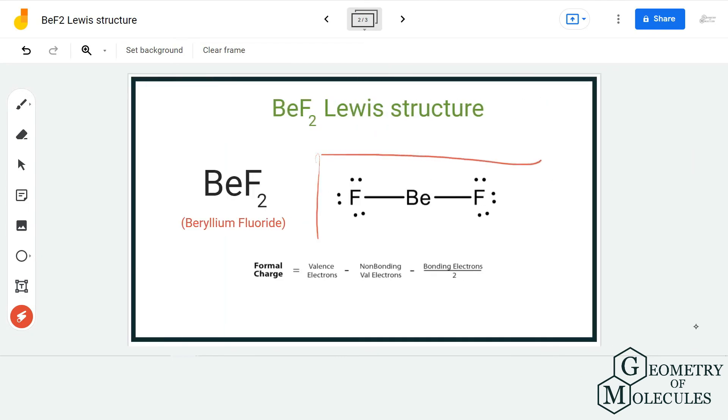By opting for this Lewis structure, we have formal charges of zero on all atoms. It's fine if beryllium has four valence electrons in its outer shell because it's an exception to the octet rule. This is the Lewis structure of BeF2, in which beryllium forms two single bonds with two fluorine atoms.